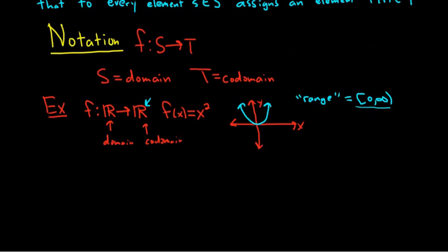There are special types of functions: functions called one-to-one, functions called onto, and functions called bijective. Let's go ahead and define all three of those very briefly.